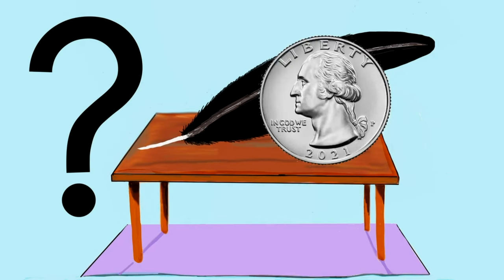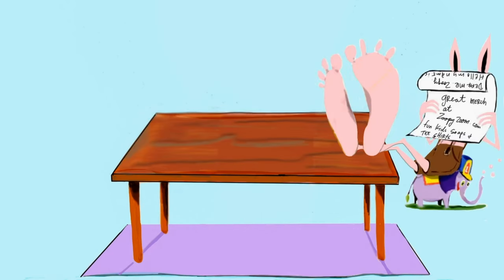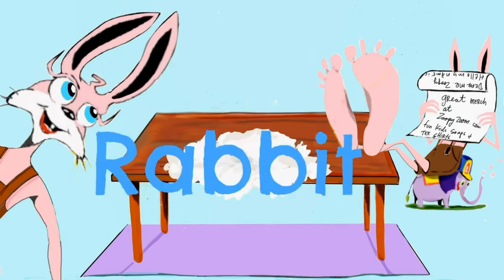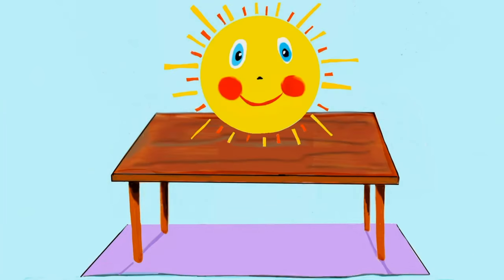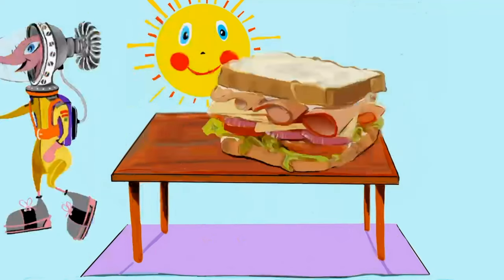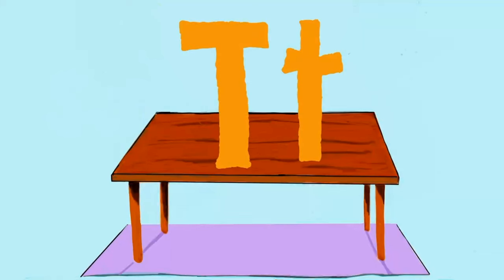Next we have the letter R. Oh, it's me again and I'm reading. There's a rocket and a rabbit. Next we have the letter S for sun — a shiny, shiny sun! And there's Louie in his space suit and his sandwich. Yum, my favourite!